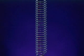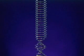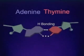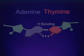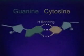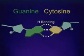There are four different bases and only certain pairs are possible in forming the rungs. Adenine is always opposite thymine and guanine is always opposite cytosine.